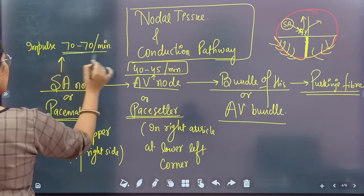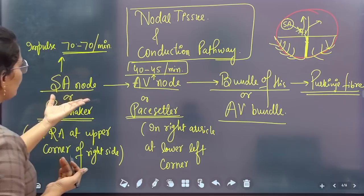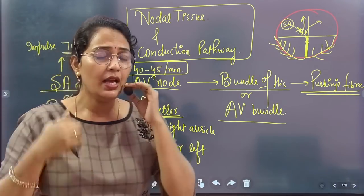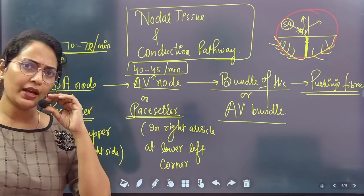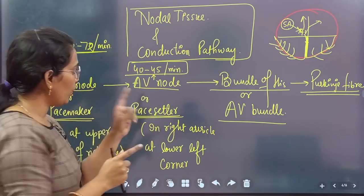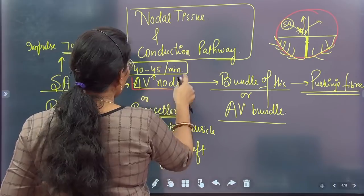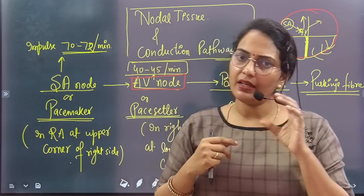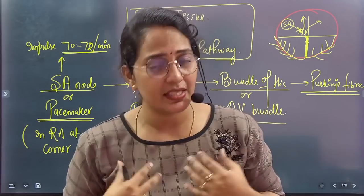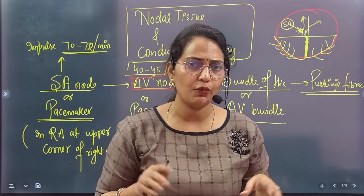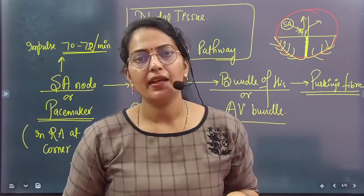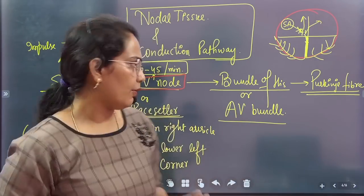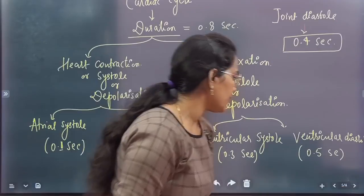From the SA node, 72 impulses are generated per minute, so our heart beats 72 times per minute. But if the SA node is ever damaged, the AV node will take over. However, the AV node generates only 40 to 45 impulses per minute. At that time, our heart rate will drop to 40–45 beats per minute, we will get less oxygen, and we will gradually become weak. That is why an artificial pacemaker is implanted in such cases.